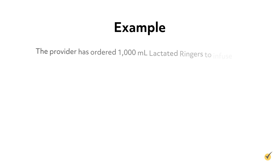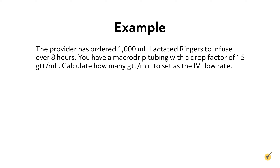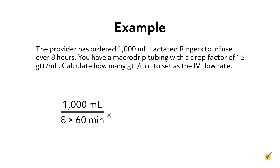Let's try an example. The provider has ordered 1000 milliliters lactated ringers to infuse over 8 hours. You have macrodrip tubing with a drop factor of 15 drops per milliliter. Calculate how many drops per minute to set as the IV flow rate. Using the formula: 1000 milliliters divided by (8 × 60 minutes), then multiplied by 15 drops per milliliter, equals 31.2, rounded to 31 drops per minute.